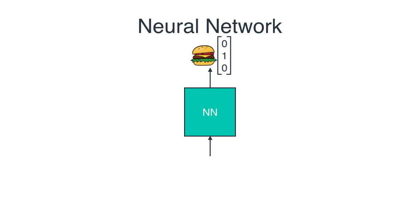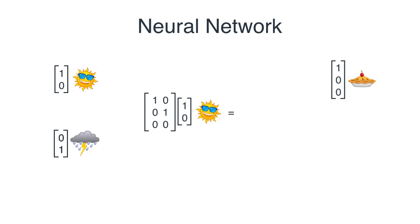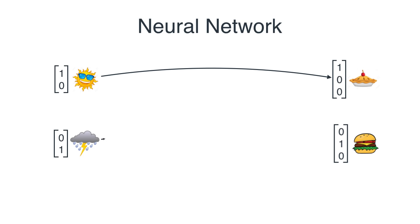What the neural network does is: if it receives a (1,0) vector corresponding to a sunny day, it returns a (1,0,0) vector corresponding to an apple pie. This neural network is actually just a very simple matrix. If I multiply the matrix by the vector (1,0) corresponding to a sunny day, my result is the vector (1,0,0) corresponding to an apple pie. And if I take the vector (0,1) corresponding to a rainy day, the answer is the vector (0,1,0) corresponding to a burger.